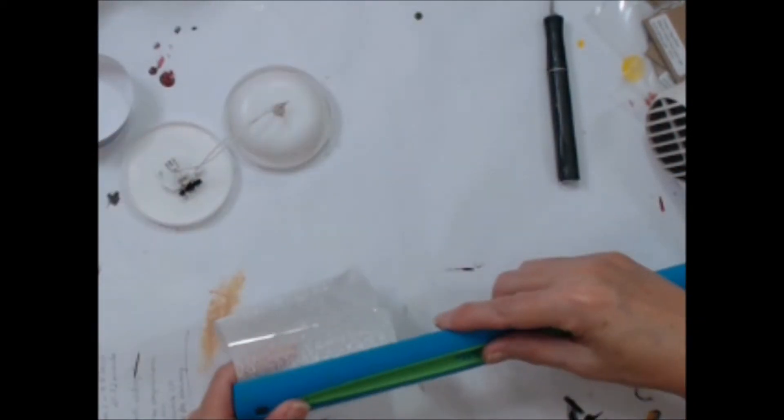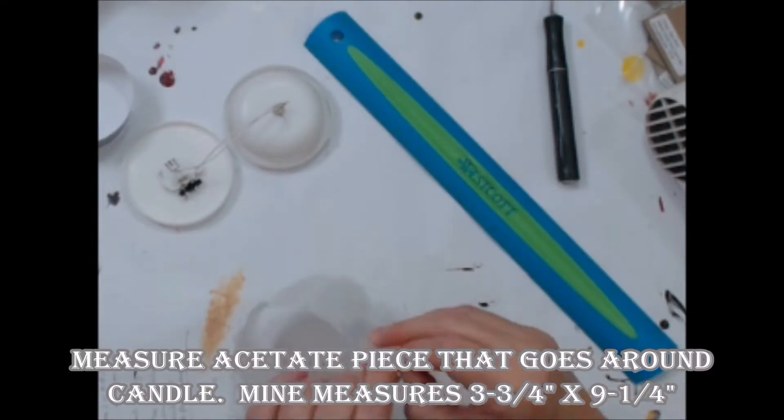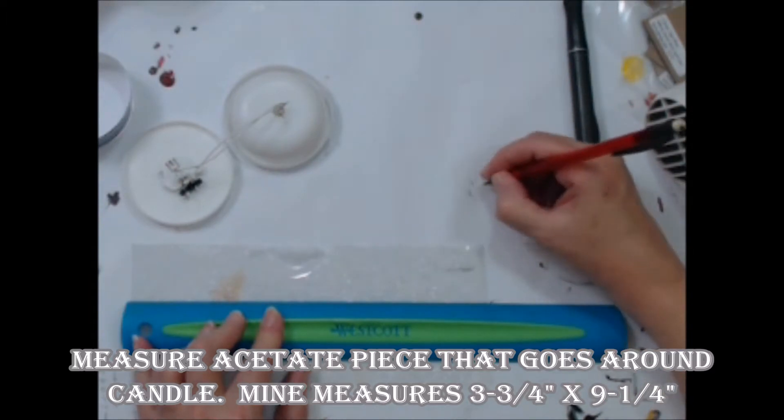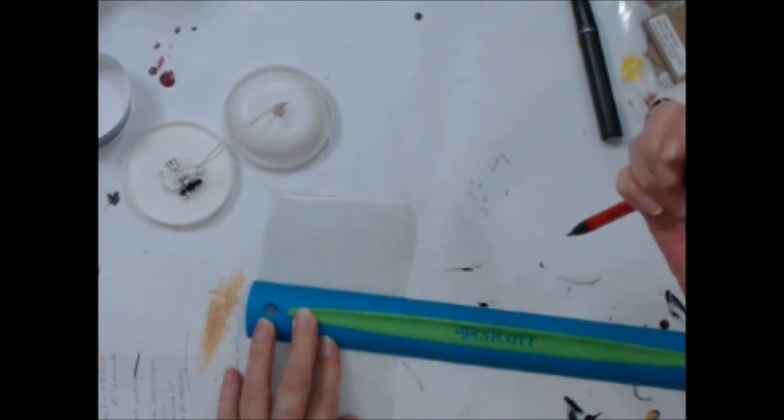Next, measure the plastic piece you just removed. It measures 3 and 3 quarter inches tall and 9 inches long. But I am adding an extra quarter inch for overlap.